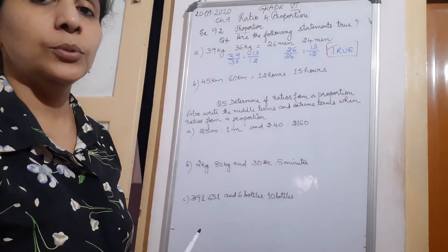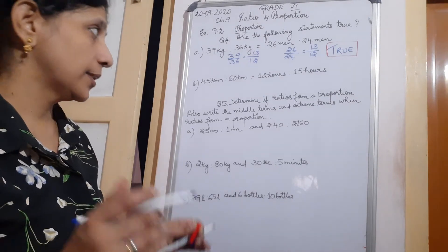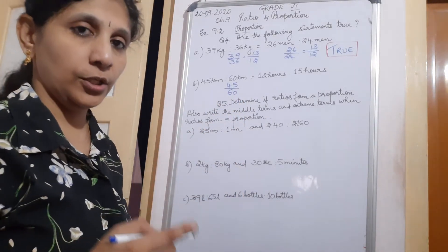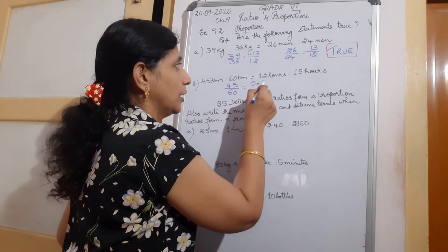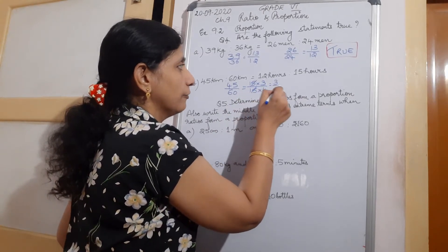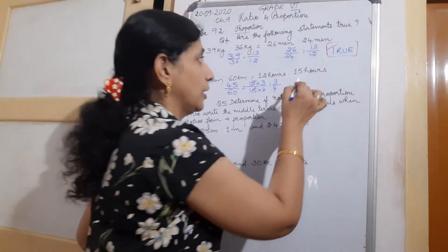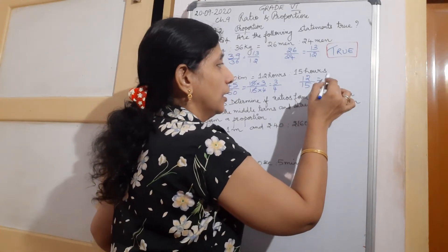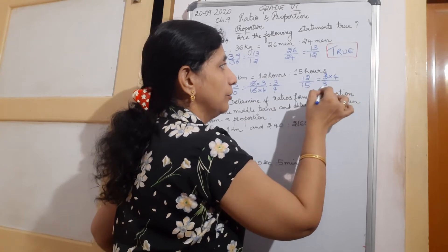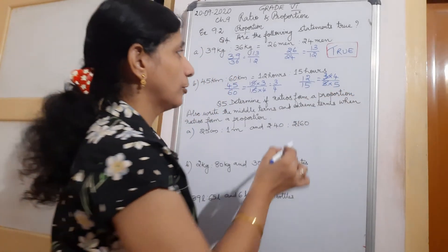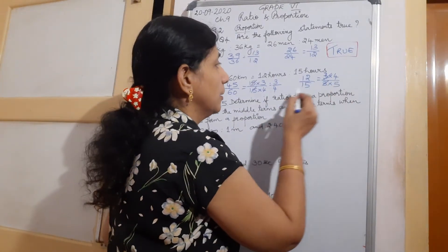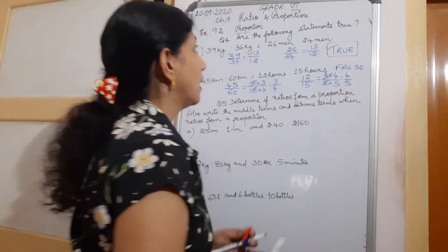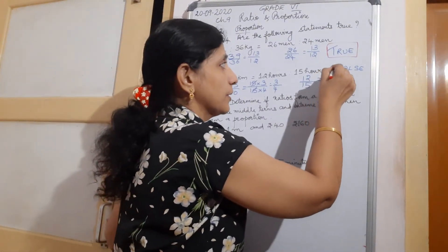Next: 45 km to 60 km equals 12 hours to 15 hours. So 45 upon 60, dividing by 15, gives 3 by 4. Now 12 and 15 are in the tables of 3, giving 3 into 4 over 3 into 5, which simplifies to 4 upon 5. One is 3 upon 4 and the other is 4 upon 5 — they are not equal. So the second statement is false. The first statement was true and the second is false.